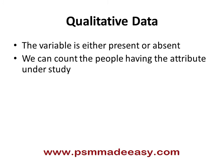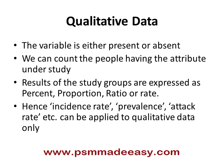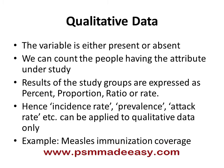We can count the people having the attribute under study. For example, we can count the eligible children who are immunized for measles — say x out of 100 eligible children are immunized. The results are expressed as a proportion, ratio, or rate. Hence the terms incidence rate, prevalence rate, and attack rate can be applied only to qualitative data where we can count the subjects who have the attribute.